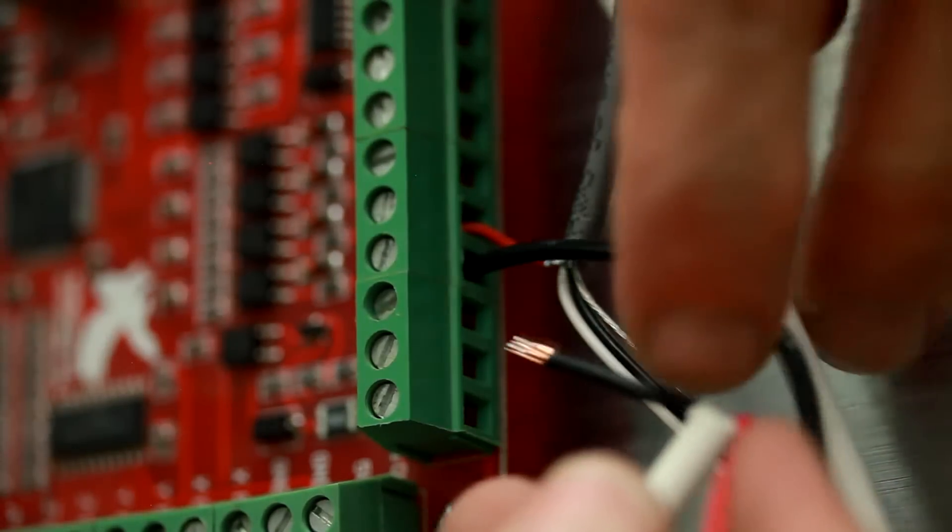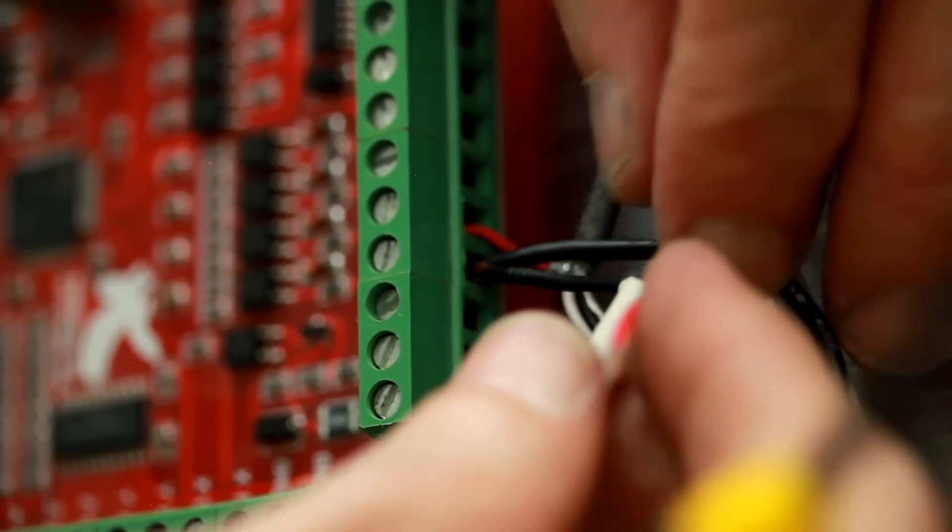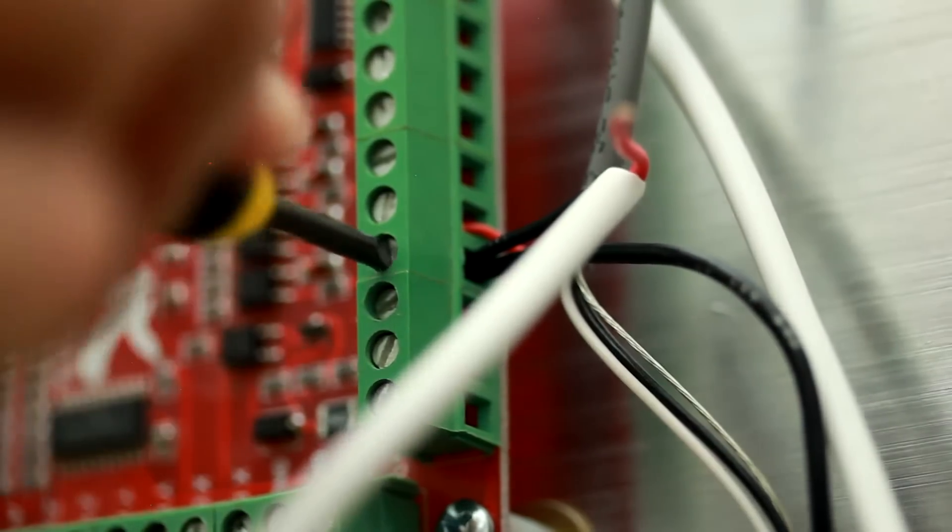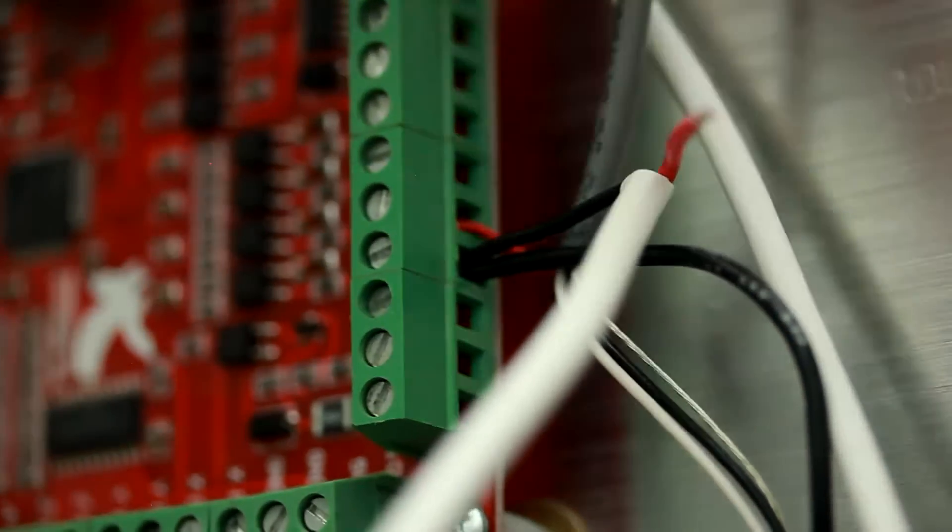Now the 24 volt power supply needs to be connected to the Mach 3 USB controller card. I'm using a 2 conductor 18 gauge cable for this purpose. This size of a gauge is probably not necessary. I'm just using it because this is what I had on hand.